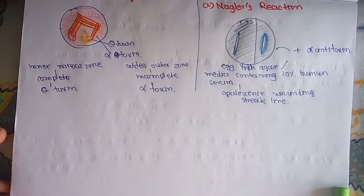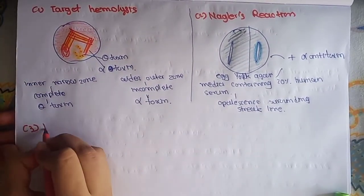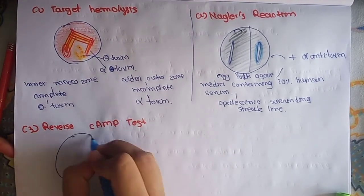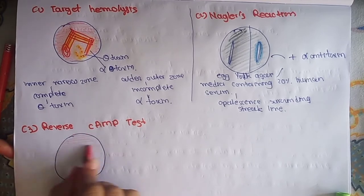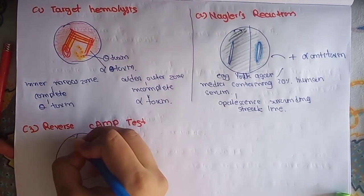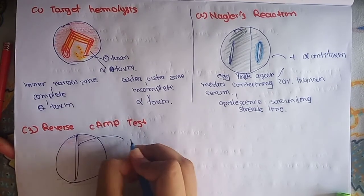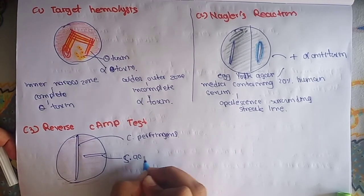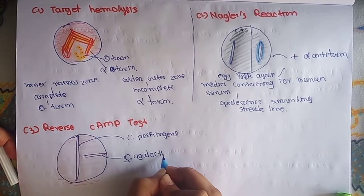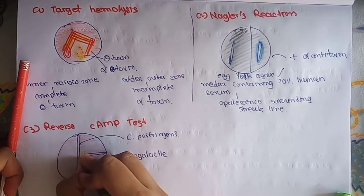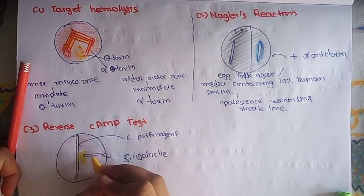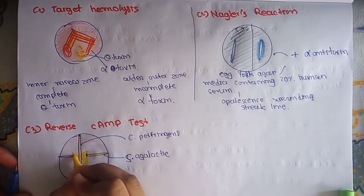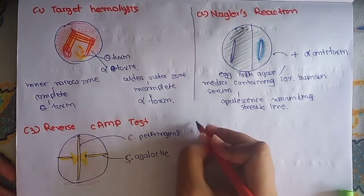The third method is reverse CAMP test. Imagine that this is the blood agar and we add C. perfringens here and perpendicular to it, Streptococcus agalactiae is streaked. The presence of enhanced zone of hemolysis arrow-shaped pointing toward the C. perfringens indicates that the test is positive. I hope this makes sense.